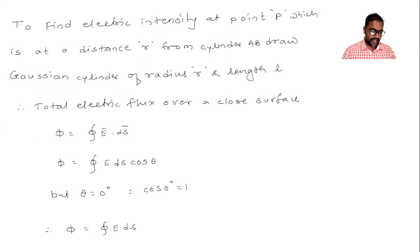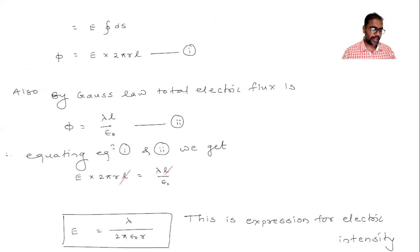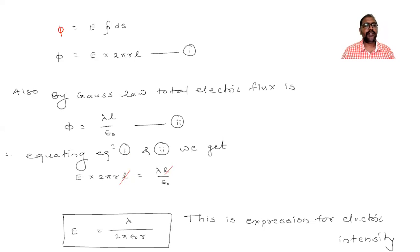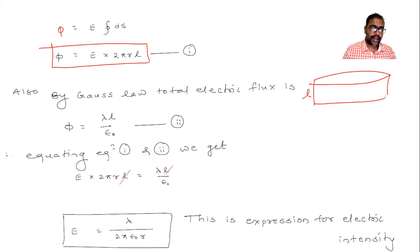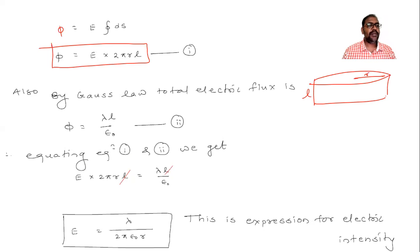Since E is constant, we take it outside the integral. The integration of dS gives the surface area of the Gaussian surface, which is a cylinder. The surface area of the Gaussian cylinder is 2πrl, where r is the radius and l is the length. So electric flux equals E into 2πrl. This is equation number one.